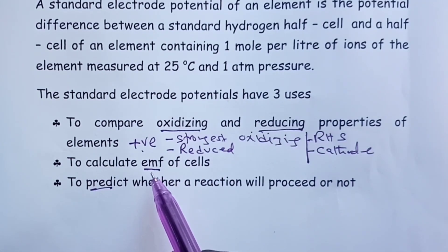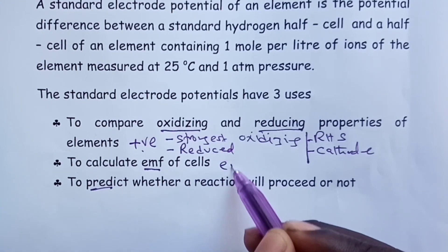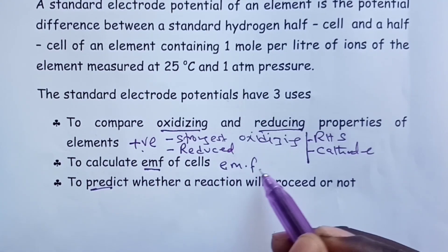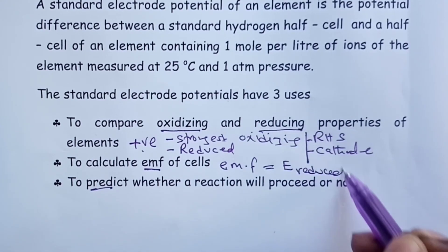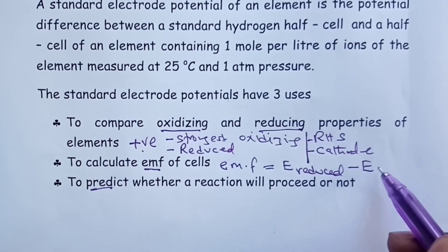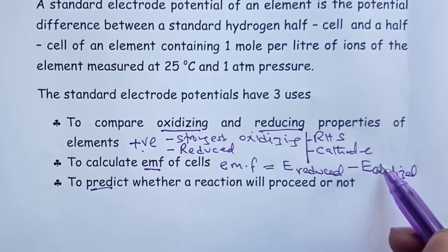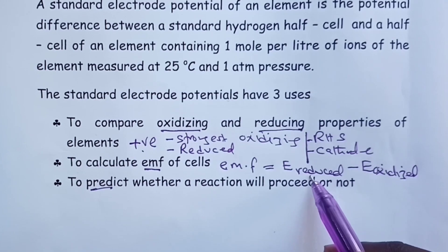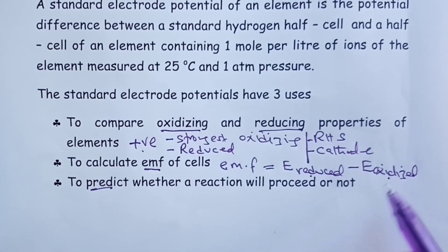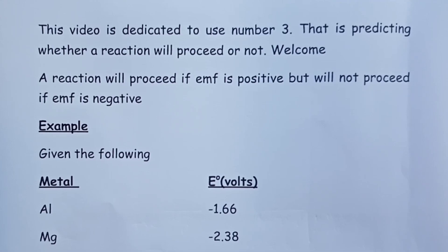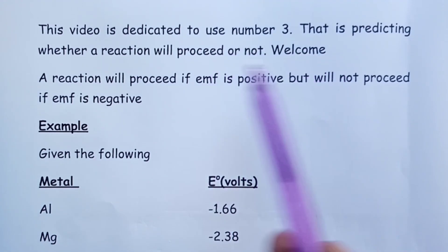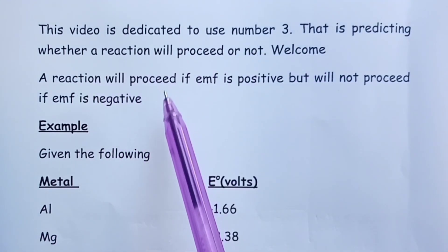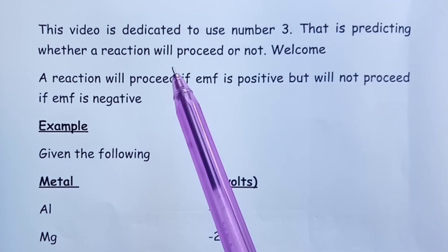For calculating EMF, the formula is: EMF of a cell equals E naught of the reduced half cell minus E naught of the oxidized half cell. To determine which half cell is reduced and which is oxidized, we refer back to use number one. This video is dedicated to use number three — predicting whether a reaction will proceed or not.